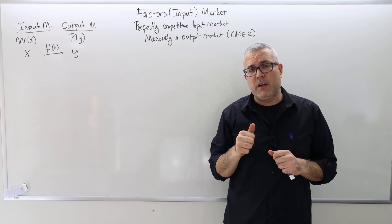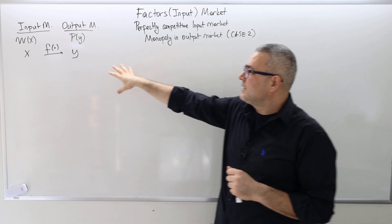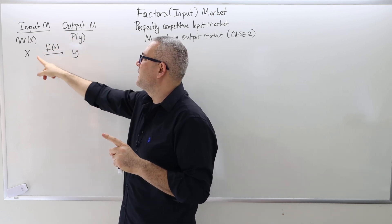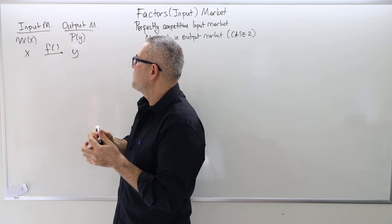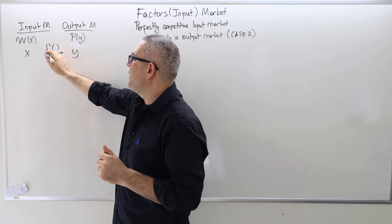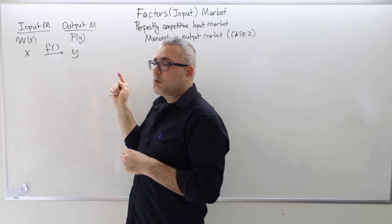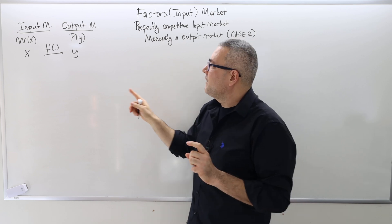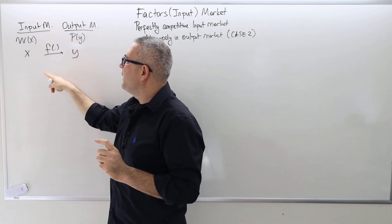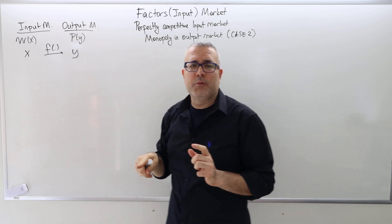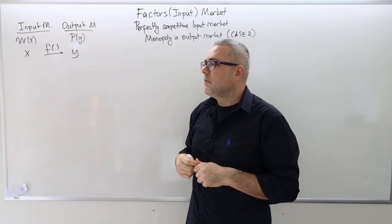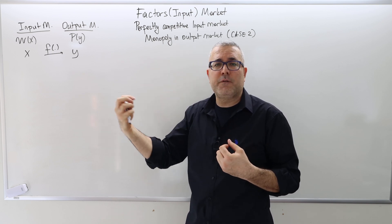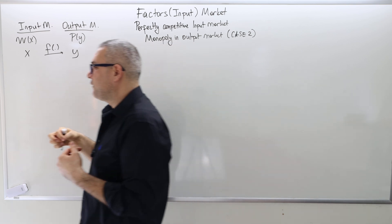So here's case two, where the firm, facing exactly the same supply curve in the input market and the same demand curve in the output market — same technology, f of x equals y — the only difference is that it is perfectly competitive in the input market, but it is a monopolist in the output market. What would happen to the optimal wage level and optimal number of workers the firm hires?